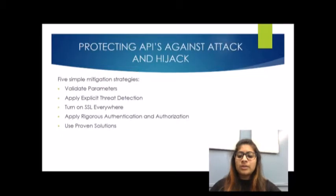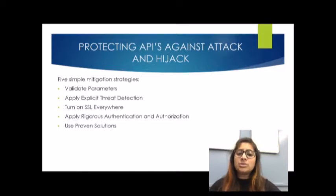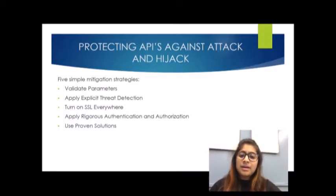Although APIs are susceptible to a broad range of attacks, applying just five simple mitigation strategies will allow an organization to securely publish APIs. The first strategy is to validate parameters. The first step is to sanitize all incoming data to confirm that it is valid and will not cause harm. The most practical approach is to apply schema validation, which should be as restrictive as possible.